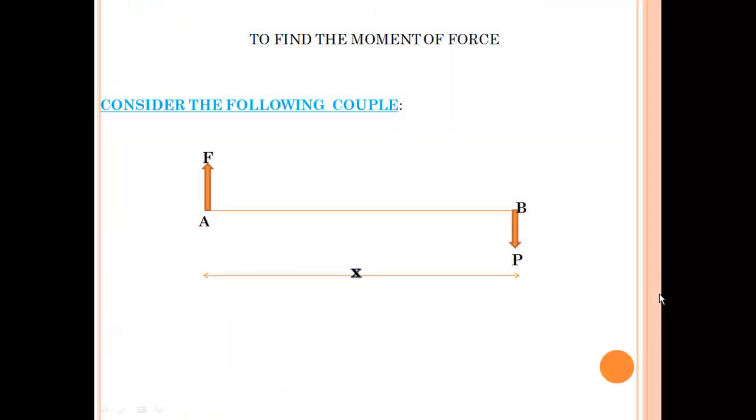To find the moment of force, consider the following example. Say this both form a couple. At point A, force F is acting upwards. At point B, force P is acting downwards. This F and P together form a couple. Let X be the distance between A and B.